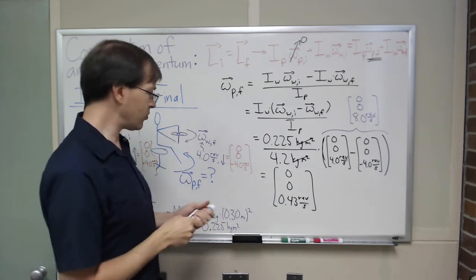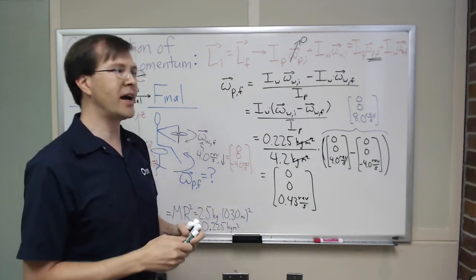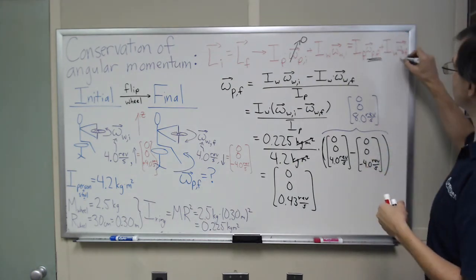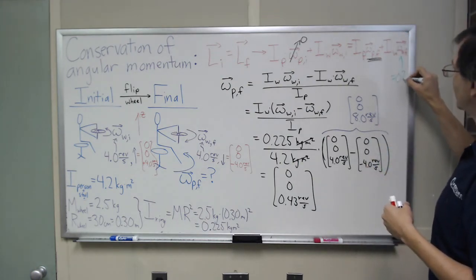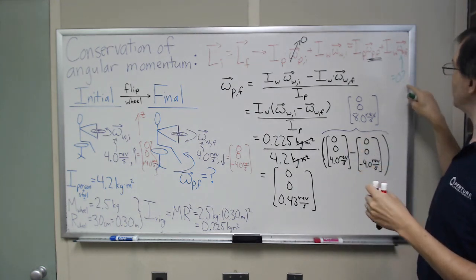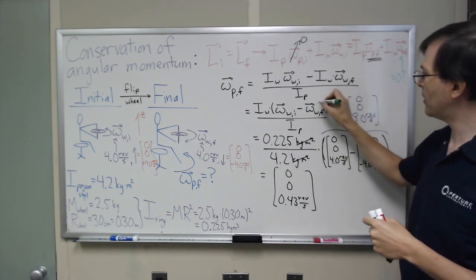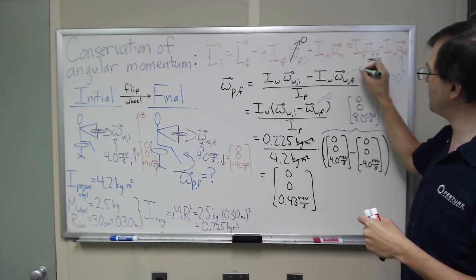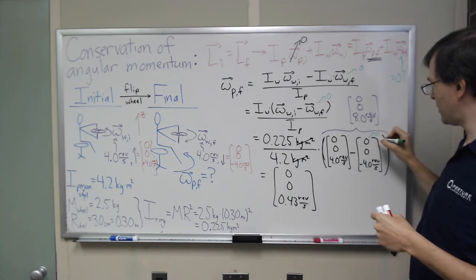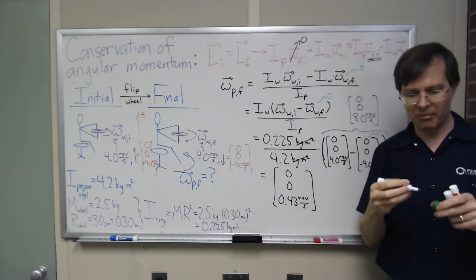By the way, if we had looked at the case where I, instead of flipping the wheel, if we looked at the case where I just stopped the wheel, where this went to 0 instead, at the very end, I grabbed the wheel, remember, I just stopped it, what would that change? If that went to 0 instead, then this term wouldn't have been there, and that means this term wouldn't have been there, and I would have had half as much, and again, that agrees with what I experienced out there in my demo.